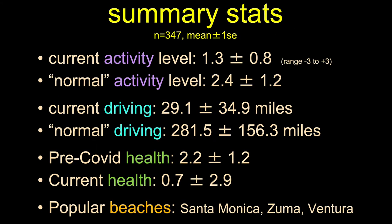Here are my summary stats — what I found so far from my data. From a range of minus three to plus three, these are means and standard errors across the whole data set. People have seemed to have been out and about less: 1.3 versus 2.4. People are driving significantly less — about 29 miles in the past week versus almost 300 miles in a typical week. And people report being less healthy now versus pre-COVID. The most popular beaches people reported going to were Santa Monica, Zuma, and Ventura State Beach.